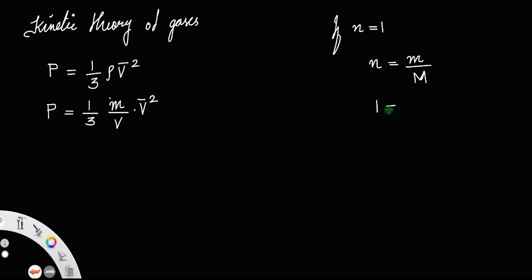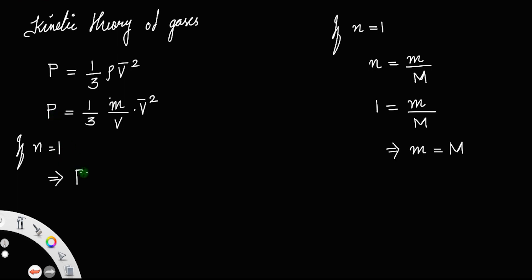If n = 1, then m = M (molecular mass). So we can write p = (1/3) × (M/V) × v². Taking V to the left, we get pV = (1/3) Mv². Let us call that equation number 1.